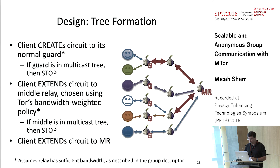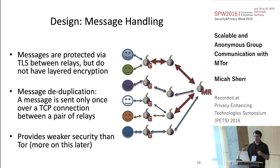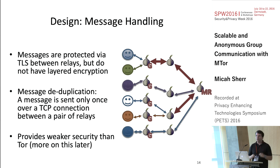Messages are protected via TLS between relays because it's Tor, but we don't use layered encryption. That means an adversary with a sufficient view of the network can follow messages across Tor — that's a weakness of our system. We have an argument in the paper why that's not necessarily a bad thing for multicast, or may be unavoidable in certain cases.